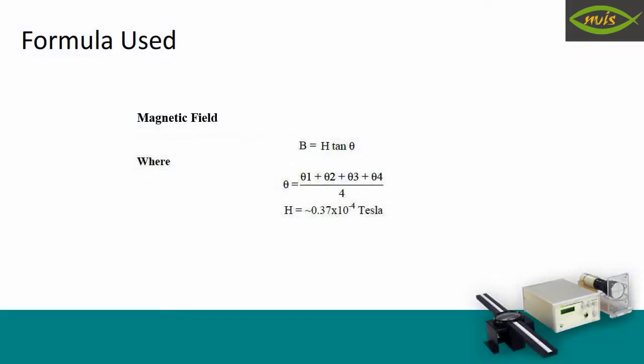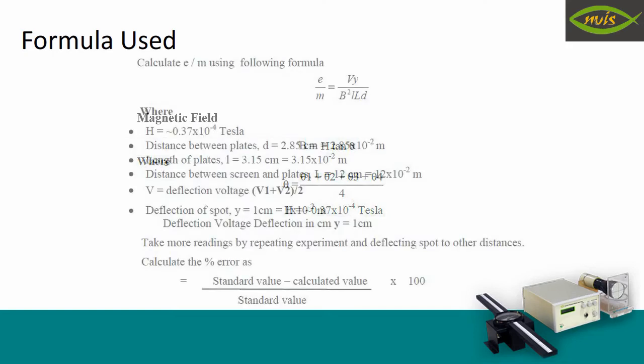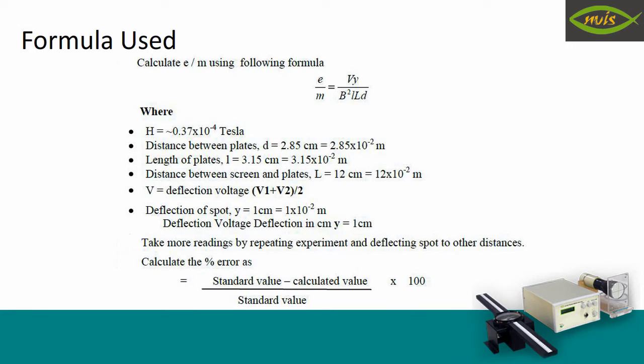Now by using the values of theta1, theta2, theta3 and theta4 we can calculate the values of magnetic field as follows. By substituting the value of magnetic field we can calculate the E by M ratio using the following formula.